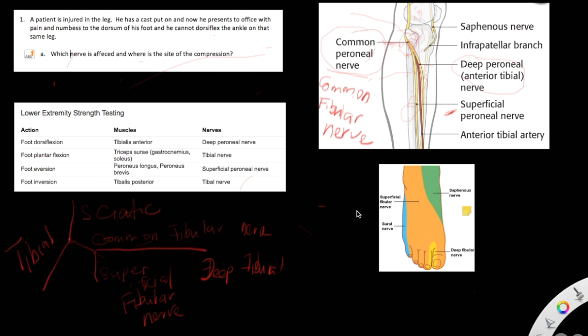In this video, I will give you a clinical case scenario and we can discuss the nerve injury associated with this case. We have a patient who is injured in the leg. He has a cast put on, and now he presents to the office with pain and numbness to the dorsum of his foot, and he cannot dorsiflex the ankle on that same leg.